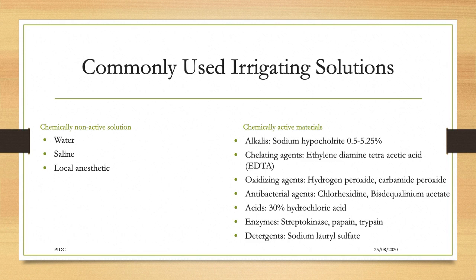Commonly used irrigating solutions are basically divided into chemically non-active and chemically active. Non-active solutions include water, saline, and local anesthetic. Chemically active materials include alkalis such as sodium hypochlorite; chelating agents such as EDTA; oxidizing agents such as hydrogen peroxide; antibacterial agents such as chlorhexidine; acids such as 30% hydrochloric acid; enzymes such as streptokinase and papain; and detergents such as sodium lauryl sulfate.